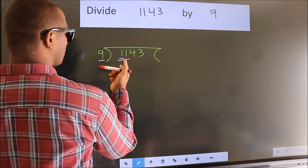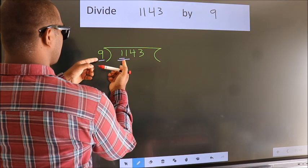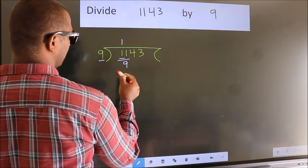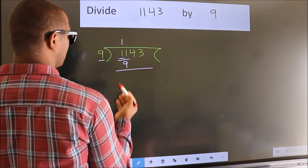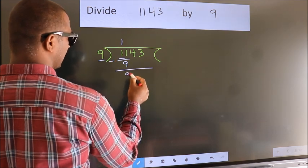A number close to 11 in the 9 table is 9 (1 times 9). Now, we should subtract. We get 2.